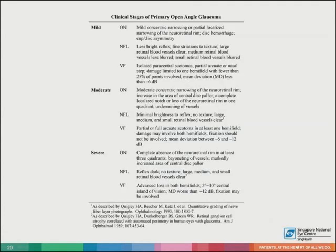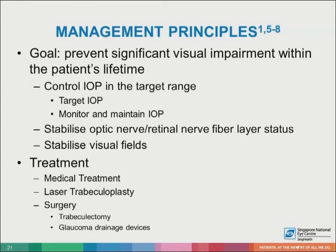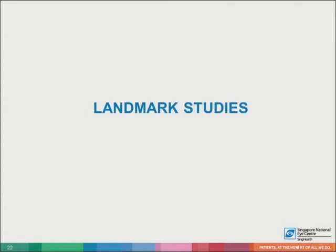Here are the clinical stages of primary open angle glaucoma as described by Quigley and colleagues. Briefly touching on management principles, the main goal is to prevent significant visual impairment within the patient's lifetime by controlling the intraocular pressure in the target range, stabilizing the optic nerve and retinal nerve fiber layer status, and the visual fields. Treatment, which will be discussed in another lecture, can be stratified into medical, laser, and surgical treatment. Below are a few pivotal glaucoma studies that one must be familiar with, summarized for your perusal.